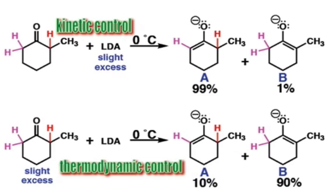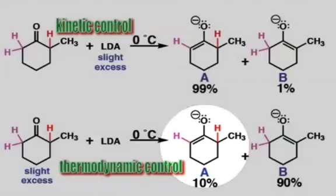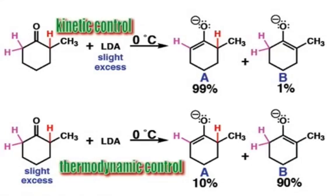However, when we switch the reaction conditions and provide a slight excess of 2-methyl cyclohexanone, primarily enolate B is formed. We know from the first experiment that enolate A is formed fastest, so enolate A will still be formed fastest in the second reaction. You should stop the webcast now and think about how adding a slight excess of 2-methyl cyclohexanone can provide a pathway for enolate A, the fastest formed enolate, to transform into enolate B.